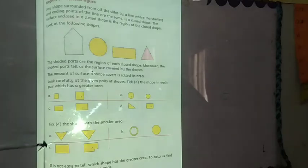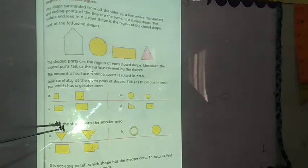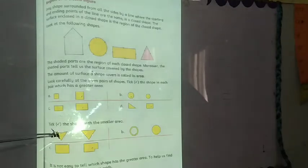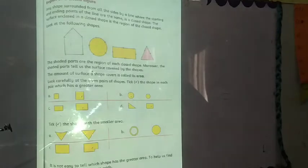Look carefully at the given pairs of shapes. Tick the shape in each pair which has a greater area. Now you can see which shape has the greater area by looking at its size. It is not easy to just look at figures and tell which area is more or less. So, to find the area we use square grids.